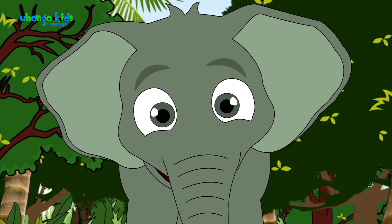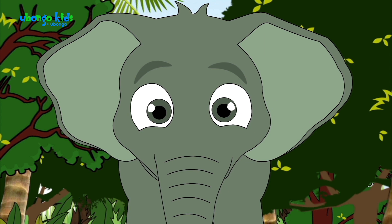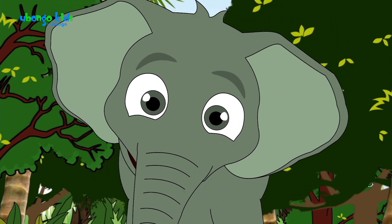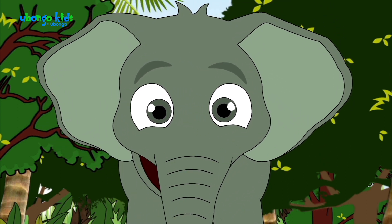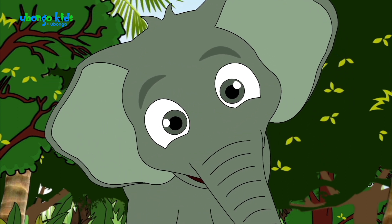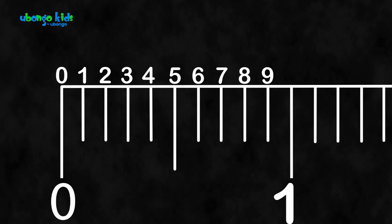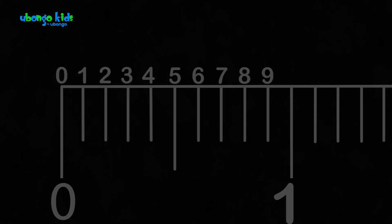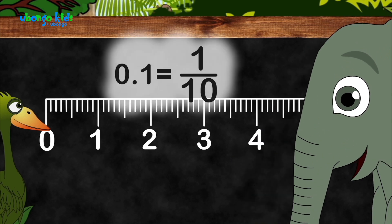And now let me convert 0.9 to a fraction — a number with a denominator of ten. I look at the number right after the decimal point, which means a number out of ten, and I can write it as nine-tenths. What about 0.1? That would just be one-tenth.